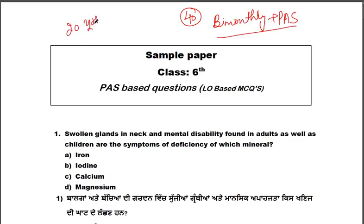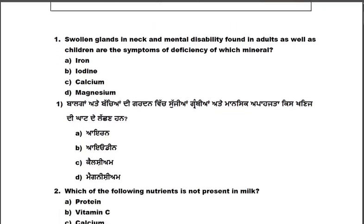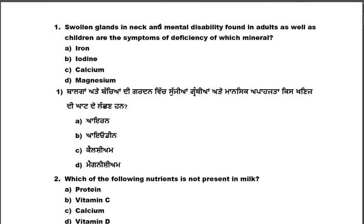Which questions do we have to do? We have to do our best because we have to add the final paper. So let's discuss. The first question is: swollen glands in the neck and mental disability found in adults as well as in children are the symptoms of deficiency of which material?